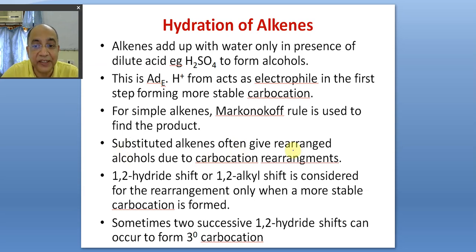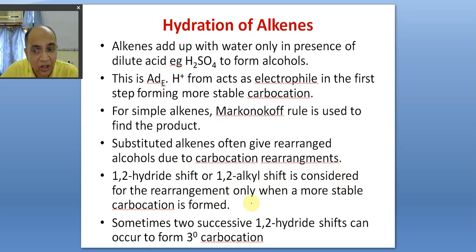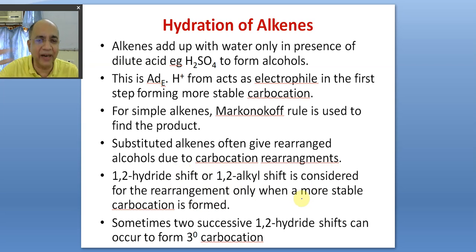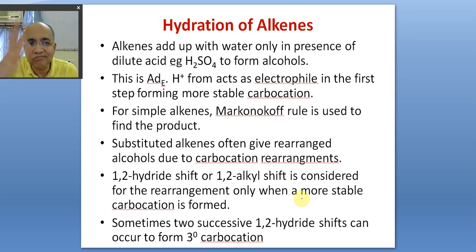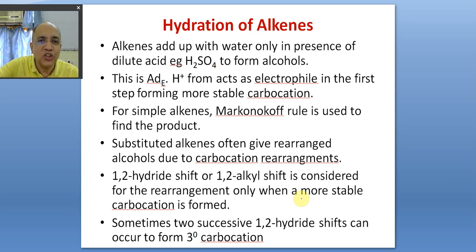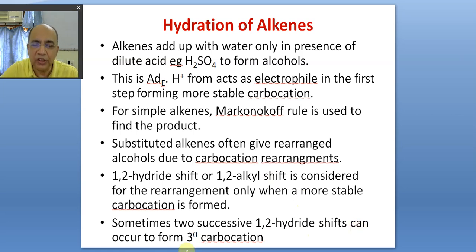Substituted alkenes often give rearranged alcohols as major products due to carbocation rearrangements. A 1,2-hydride shift or 1,2-alkyl shift is considered only when a more stable carbocation is likely to be formed — the driving force must be promotion in stability. A two-degree to two-degree shift will not occur; only two-degree to three-degree or one-degree to two-degree shifts occur. Successive double promotion by two 1,2-hydride shifts is very rare.